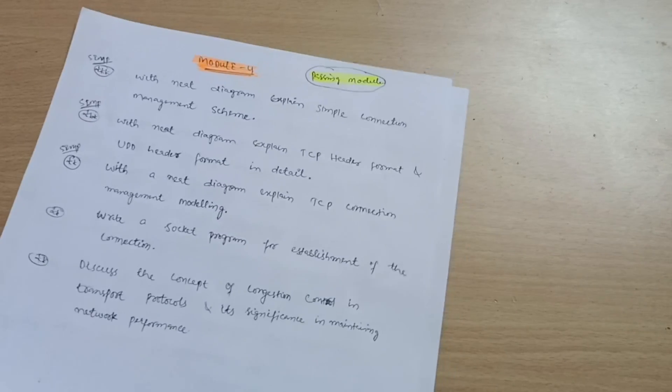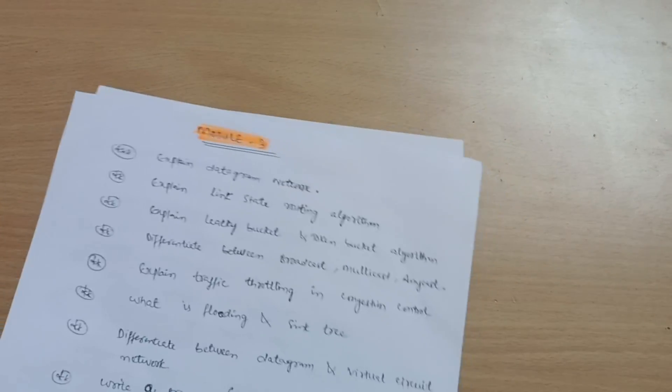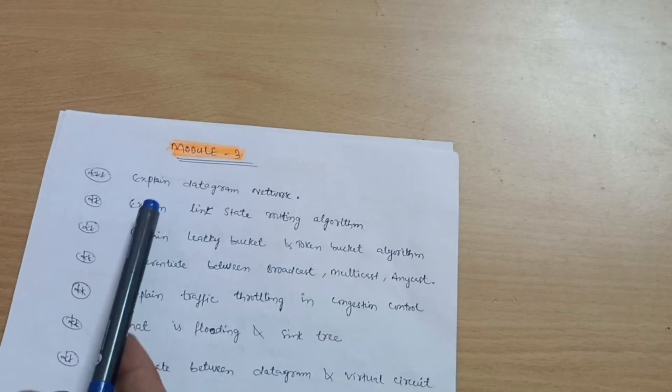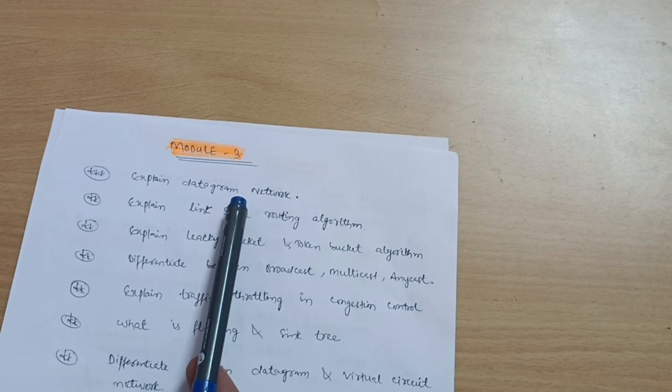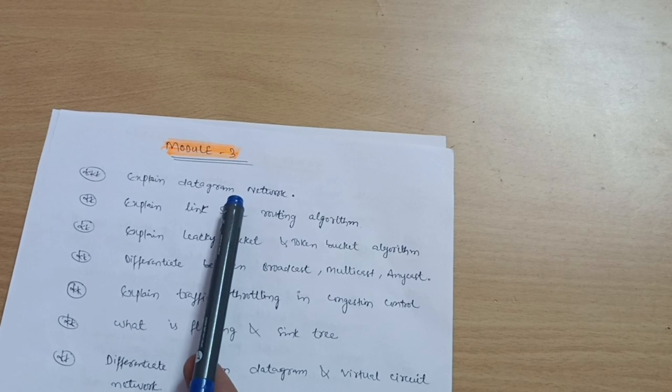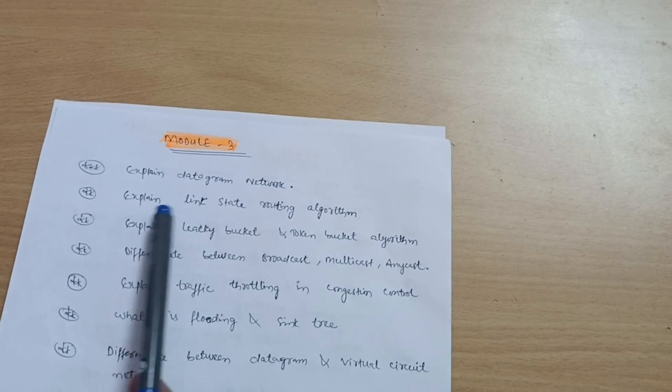Next is Module 3. In Module 3 we have: Explain datagram network - it is obviously the brother of Instagram and Telegram (joking aside, this is serious). Explain datagram network. Explain link state routing algorithm.